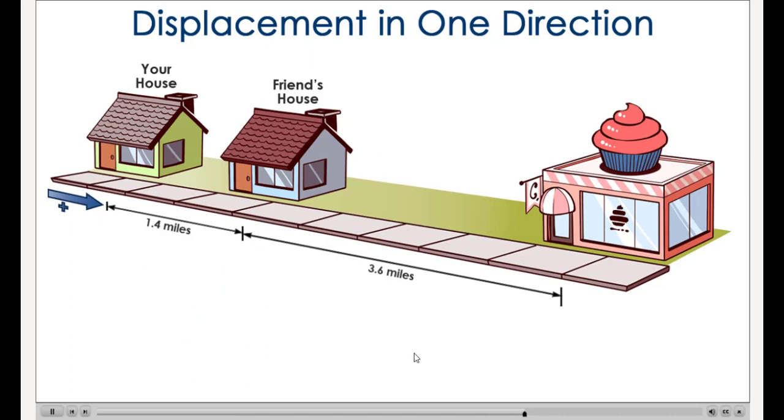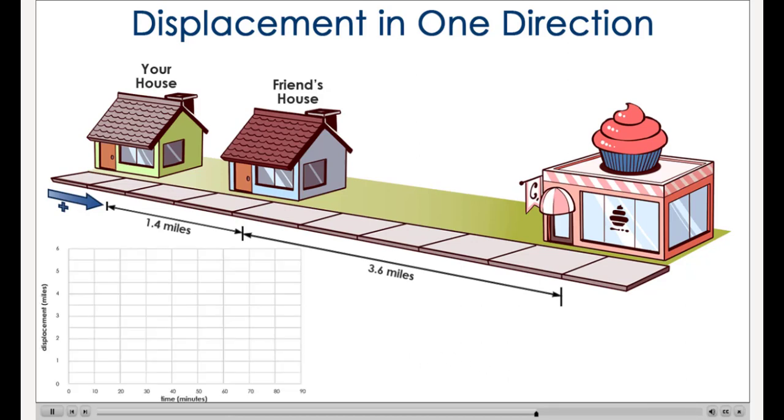Let's plot the motion of the bike rider. We'll assume the rider rides at a constant speed during each segment of the trip. At each point you reach, we'll plot the time and displacement on the graph below. When you start at your house, both your time and displacement are at zero.